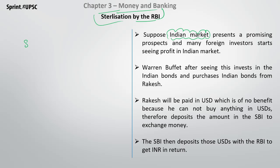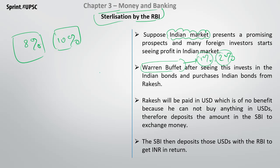Suppose Indian bonds provide 8% or 10% per year interest. If the bond interest prevailing in the market — say, like Warren Buffett in America — is only 1% or 2%, then Indian bonds at 8–10% are very attractive. Foreign investors can invest in Indian bonds, giving money and receiving returns, which affects the exchange rate — for example, 1 dollar equals 50 rupees.